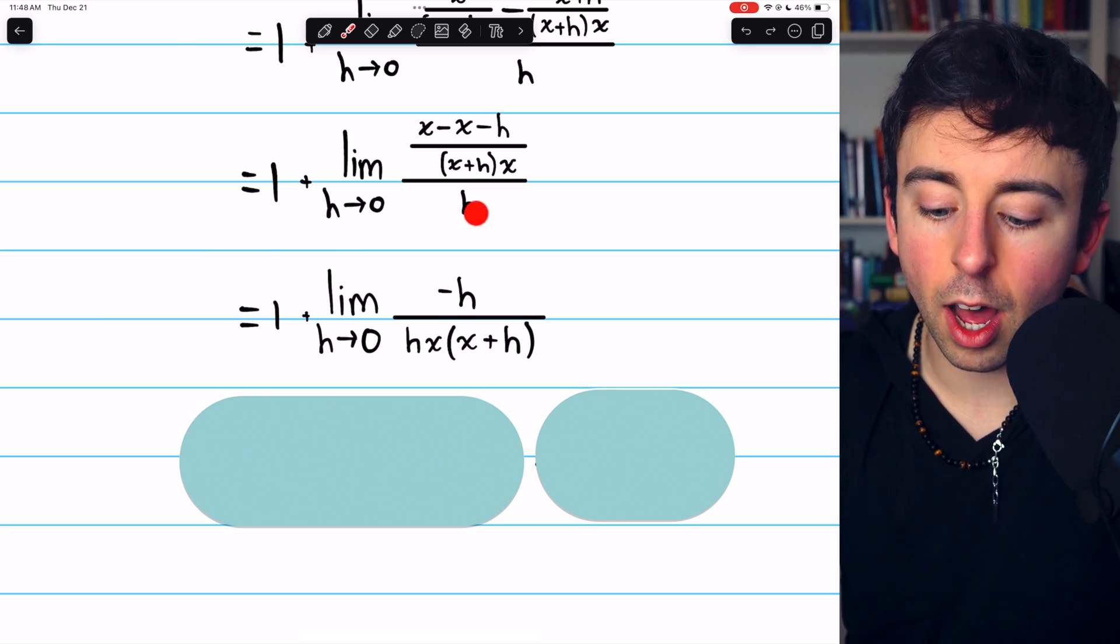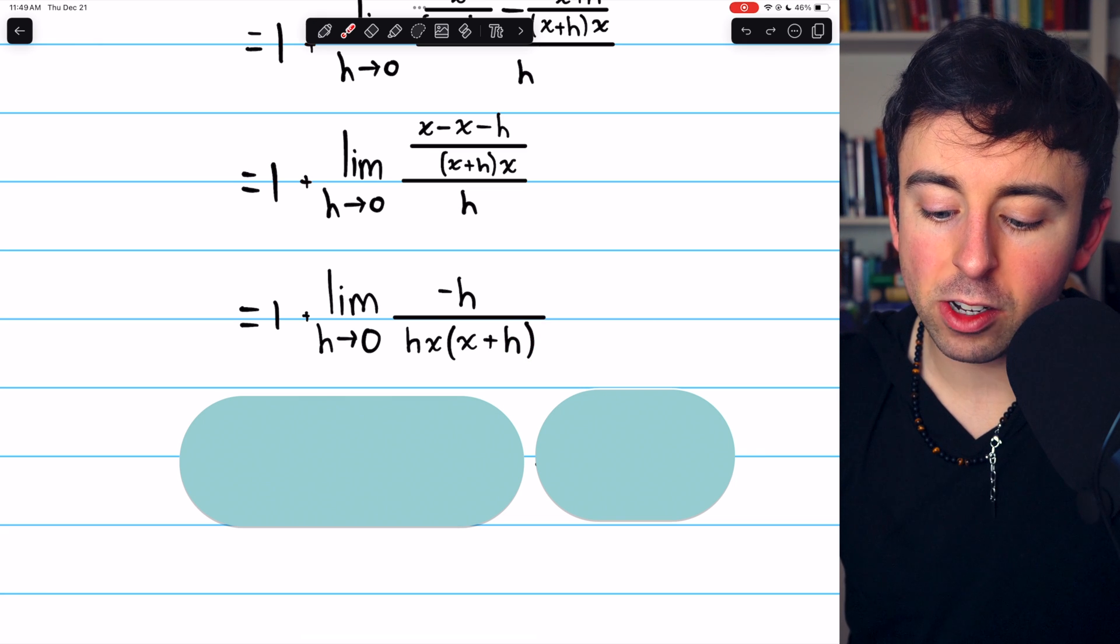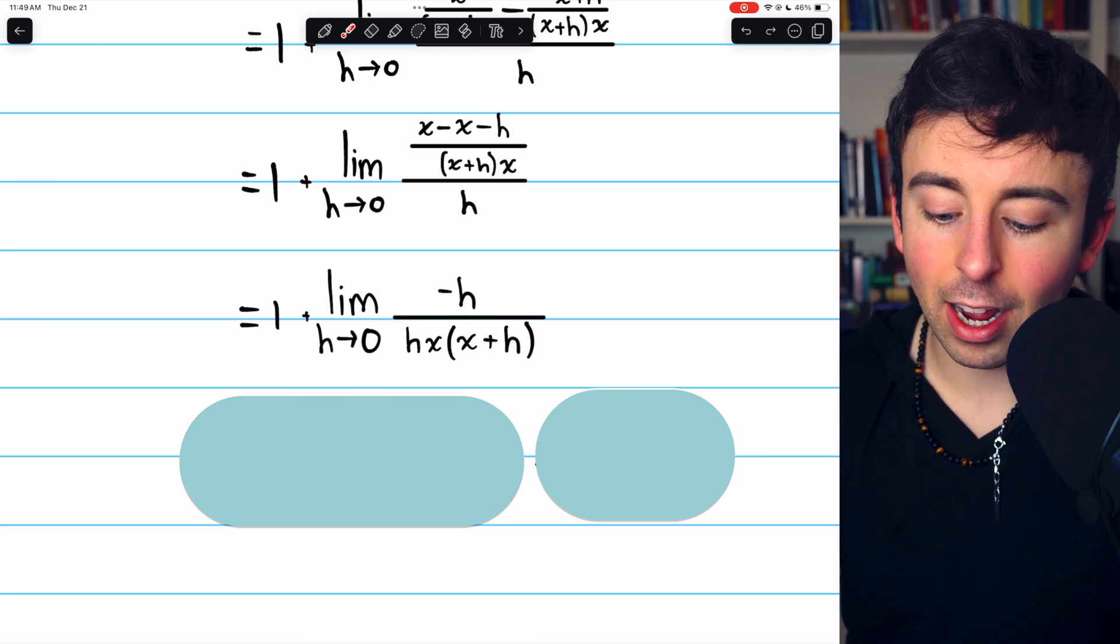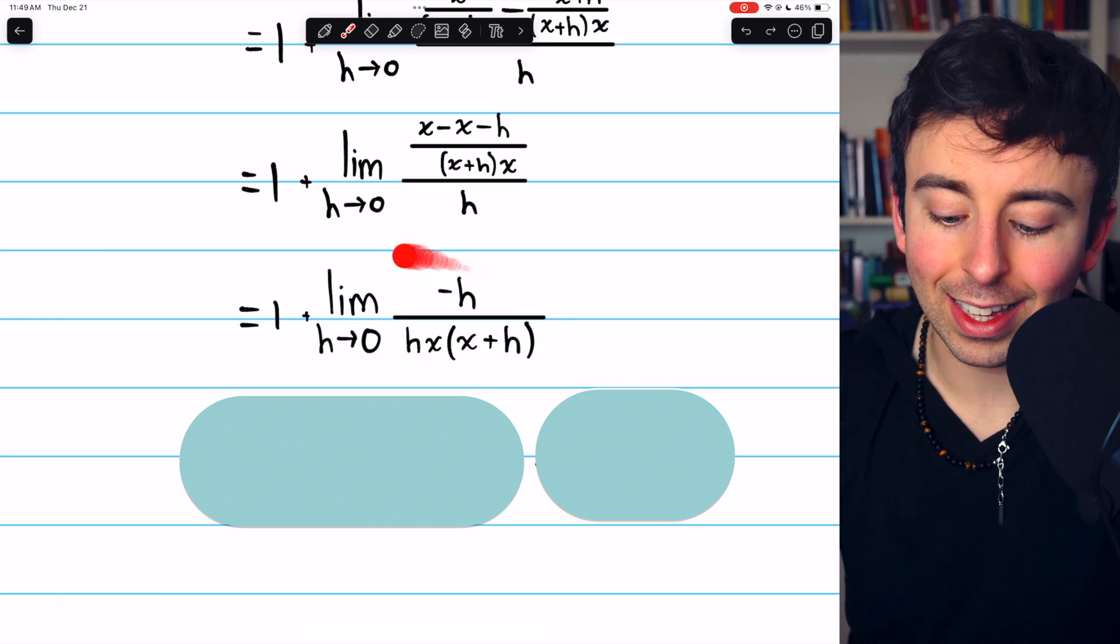So we just have negative h divided by x times x plus h, and also getting divided by h. So it looks like this.